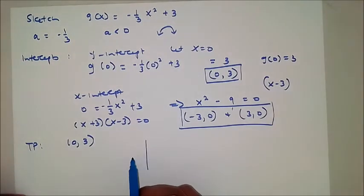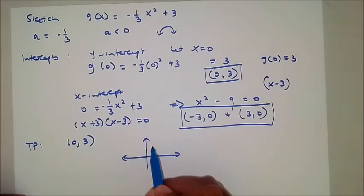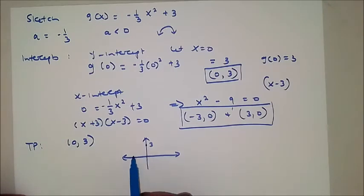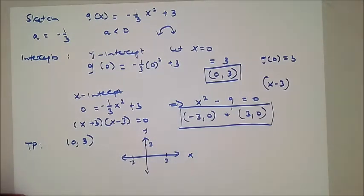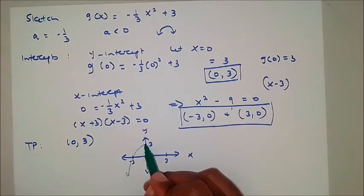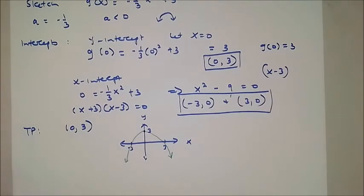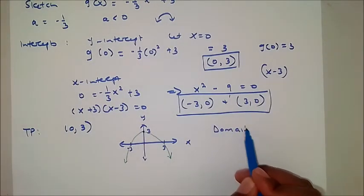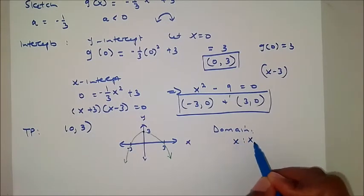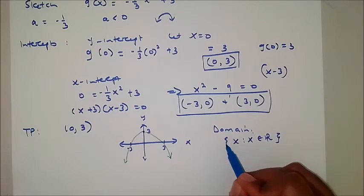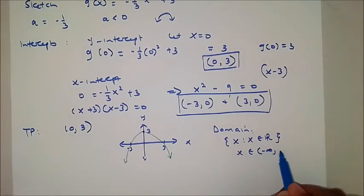Now let's sketch the graph. The y-intercept is at 3, the x-intercepts are at negative 3 and positive 3, and the turning point is at (0, 3). This is how your graph looks. The domain for a quadratic function is x is an element of real numbers, or x is an element from negative infinity to infinity — this function exists everywhere.